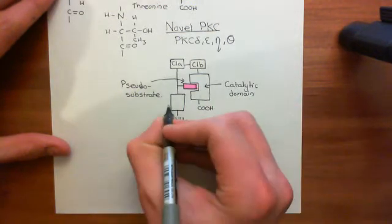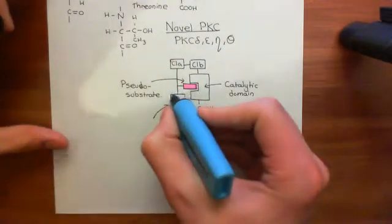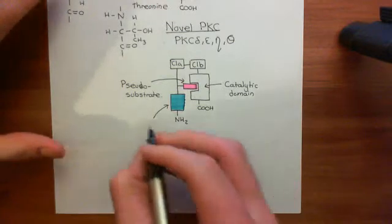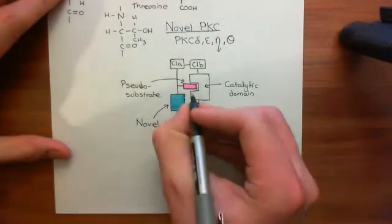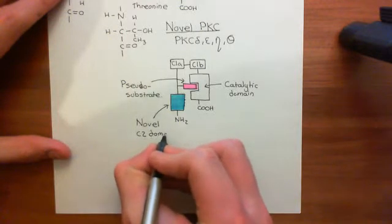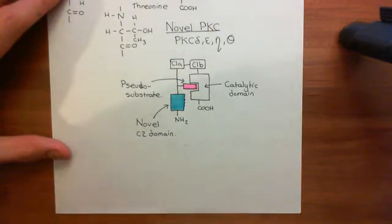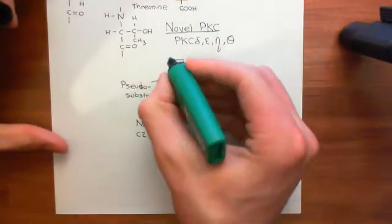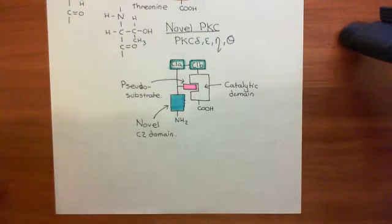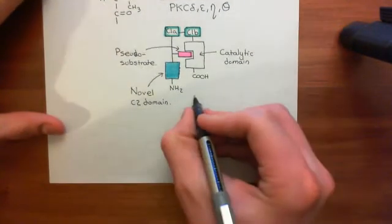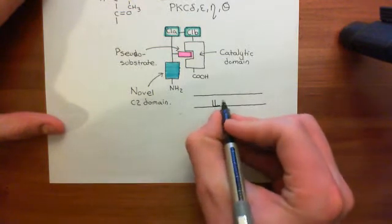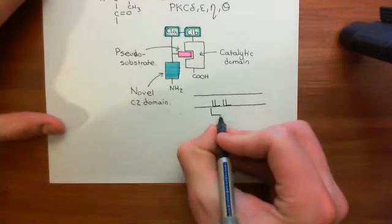This final domain at the amino-terminal portion, coloured in blue, is the novel C2 domain. The novel C2 domain does not recognise calcium — it does not bind calcium and does not activate the protein kinase C enzyme when calcium binds to it. However, the C1A and C1B domains are still completely functional within novel protein kinases, and they still recognise diacylglycerol molecules. When diacylglycerol levels rise within the inner leaflet of the phospholipid bilayer, the novel protein kinase C enzyme migrates up to the inner leaflet.